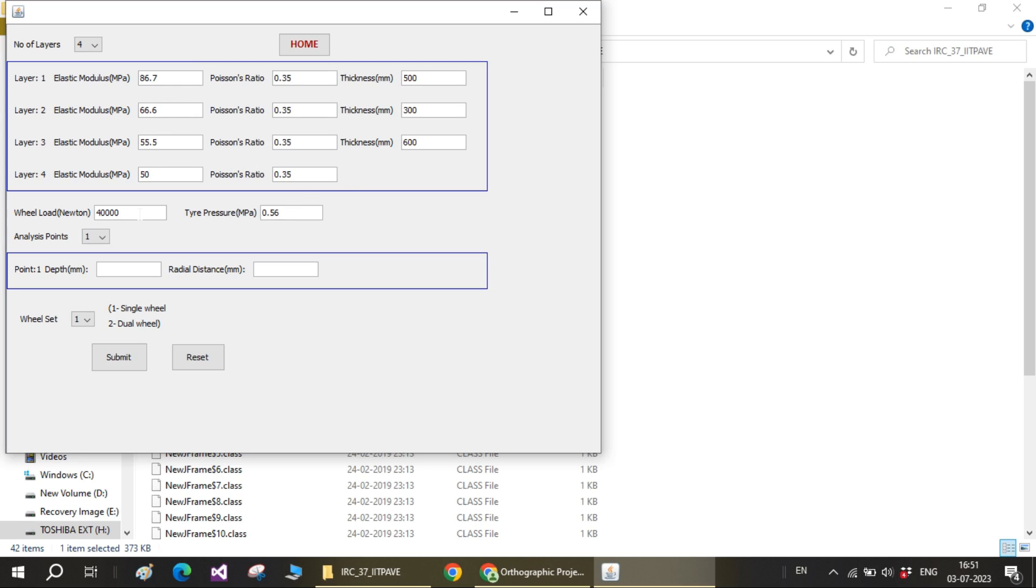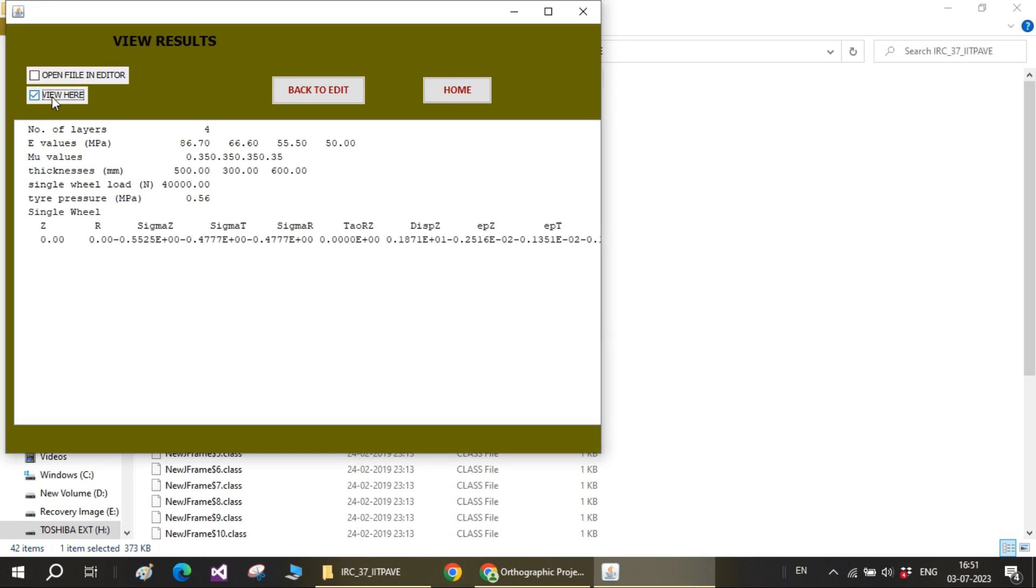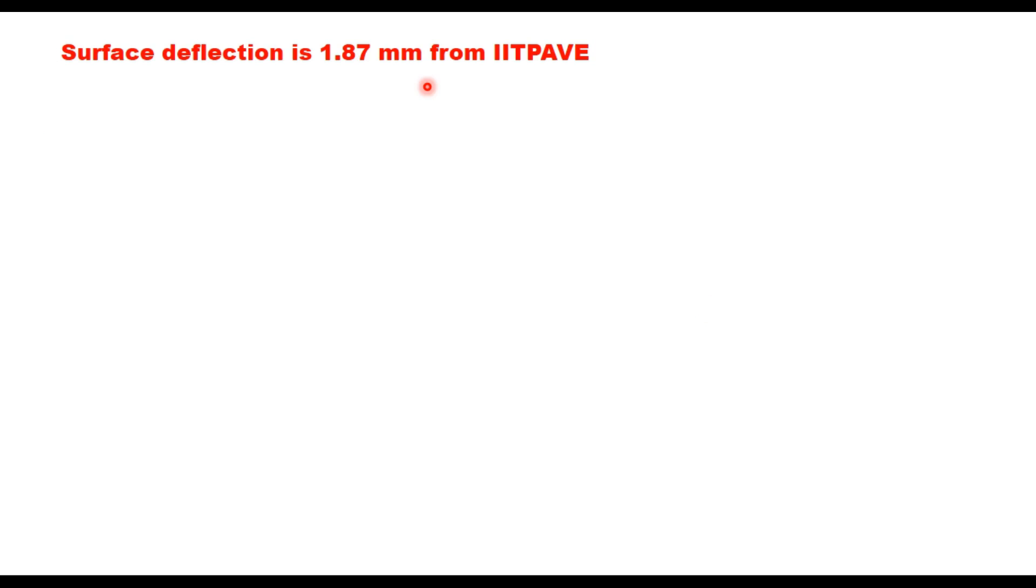Wheel load 40,000, contact pressure 0.56 MPa. Analysis point is 1 and that is the surface deflection you are interested in. So submit the data. OK. Run the program. OK. And you can see the result here. See here displacement in Z direction 1.87 mm. So that is the displacement. So surface deflection from IIT PAVE software is 1.87 assuming a four layer structure.